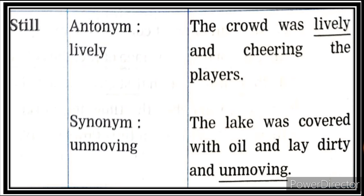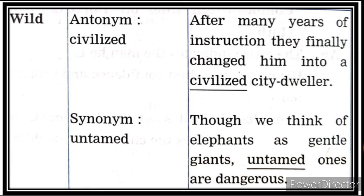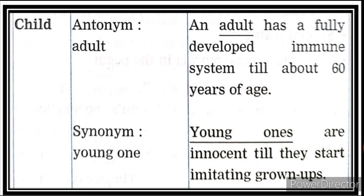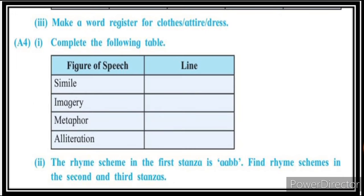'Still' — antonym: lively; synonym: unmoving. The crowd was lively and cheering the players; the leg lay dirty and unmoving. 'Wild' — antonym: civilized; synonym: untamed. After years of instruction they changed him into a civilized city dweller; though we think of elephants as gentle giants, untamed ones are dangerous. 'Fall' — antonym: rise; synonym: drop. 'Child' — antonym: adult; synonym: young one. An adult has a fully developed immune system till about 60 years of age; young ones are innocent till they start imitating grown-ups.